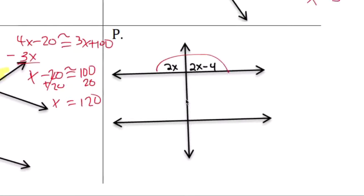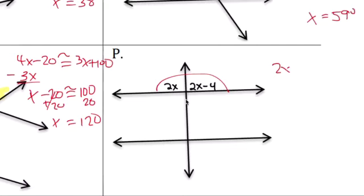So 2x plus 2x minus 4, that equals to 180. So 180 equals to 4x minus 4.